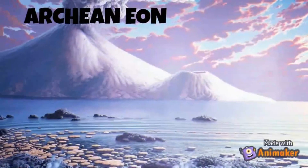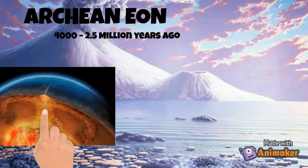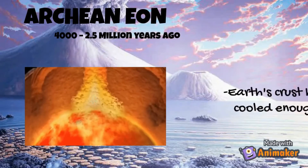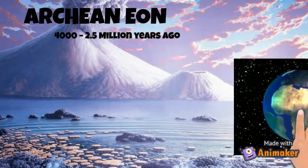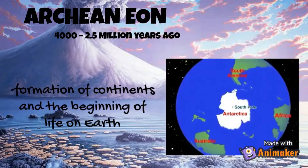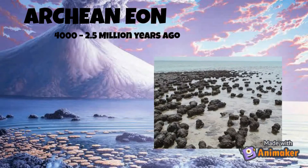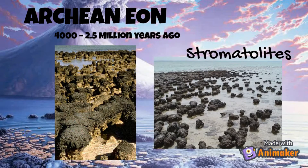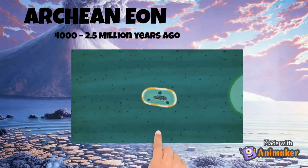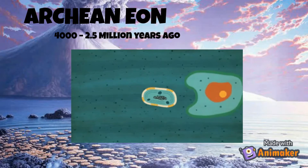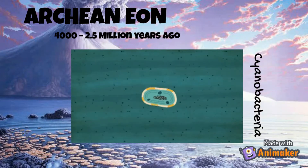Next was the Archaean eon, which was 4,000 to 2.5 million years ago. The Earth's crust had cooled enough, which allowed the formation of continents and the beginning of life on Earth. Rocks like stromatolites were present. This is when the cyanobacteria, an aquatic and photosynthetic usually unicellular bacteria, emerged.